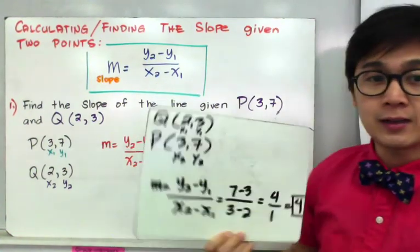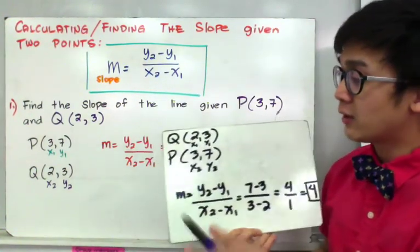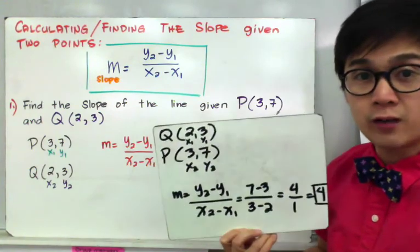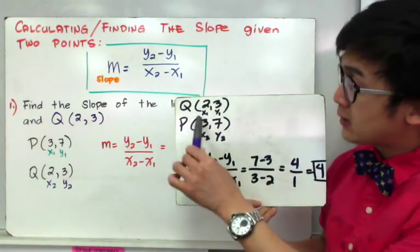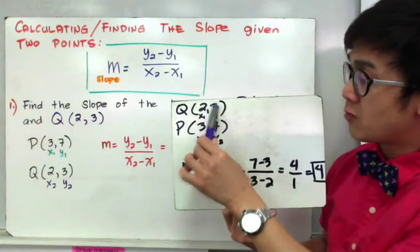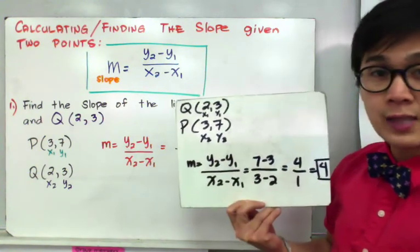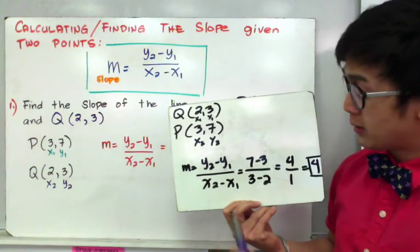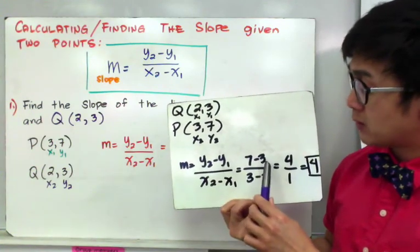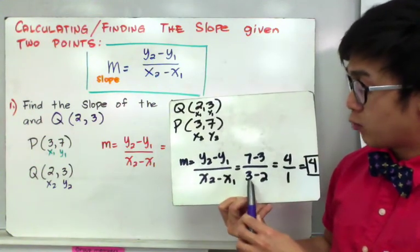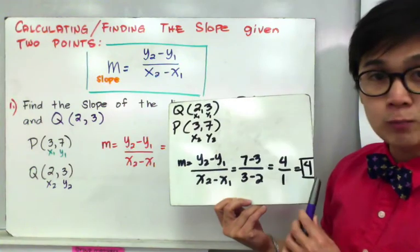So let's say instead of P as your first set, you use Q as your first set. So since x sub 1 is 2, y sub 1 is 3, and x sub 2 is 3, and y sub 2 is 7, by direct substitution, you will notice that 7 minus 3 is equal to 4, and 3 minus 2 is equal to 1, which gives you positive 4,